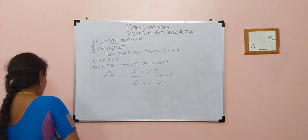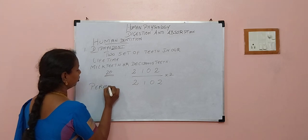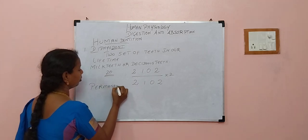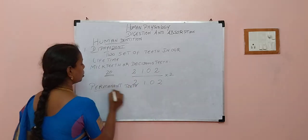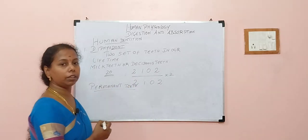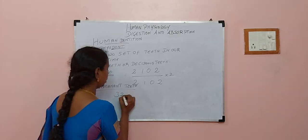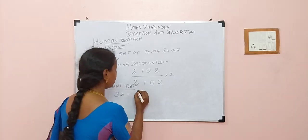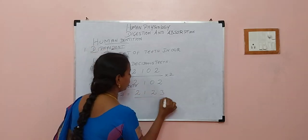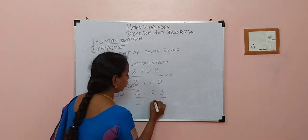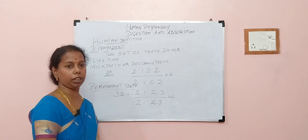The next one is permanent teeth, which we start developing at the age of 12, and the total number of teeth is 32. The formula is 2, 1, 2, 3 divided by 2, 1, 2, 3 into 2, as I told you how to calculate.